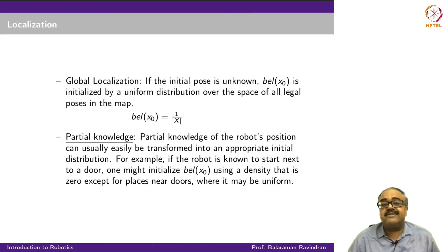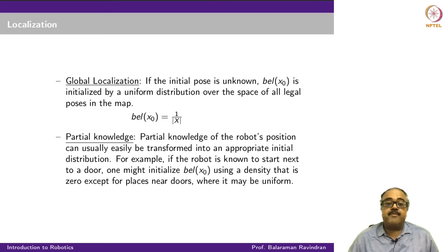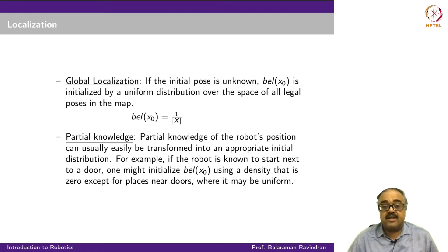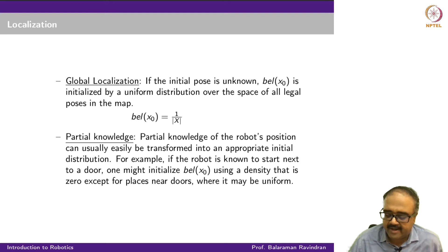For global localization, I just say bell(x0) is a uniform distribution — 1 over the size of x — and start from there. The regular updates will essentially give the global localization result. If I have a belief distribution like the particle filter case, which can handle multiple hypotheses, I can do proper global localization. If I have a Gaussian filter, it will quickly narrow down on a single hypothesis, which might be wrong — it will find it hard to fit the right distribution quickly.